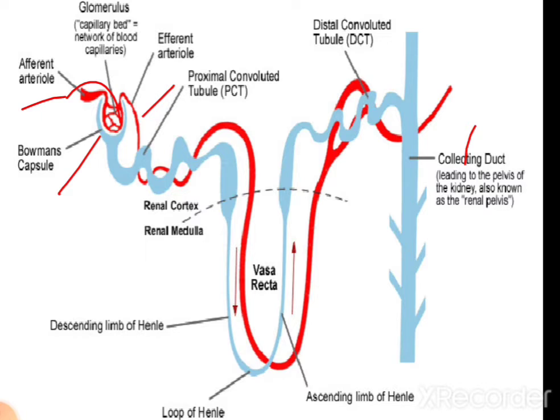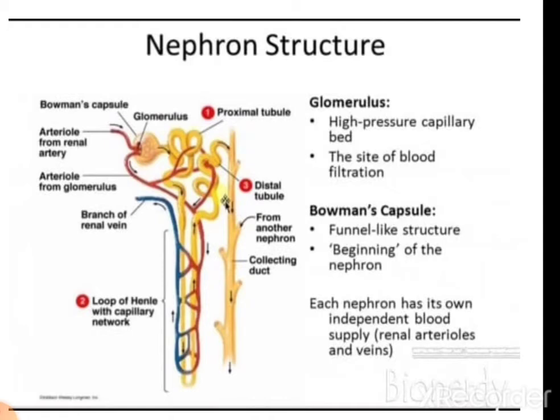In the medulla there is a U-shaped part of the nephron known as the loop of Henle. The distal part of the nephron lies again in the cortex and is known as the DCT — distal convoluted tubule — which directly opens into the collecting duct. In the glomerulus, there is a high-pressure capillary bed which is the site of blood filtration, and the Bowman's capsule is the funnel-like structure which is the beginning of the nephron. The nephron has its own independent blood supply via the renal arterioles and venules.